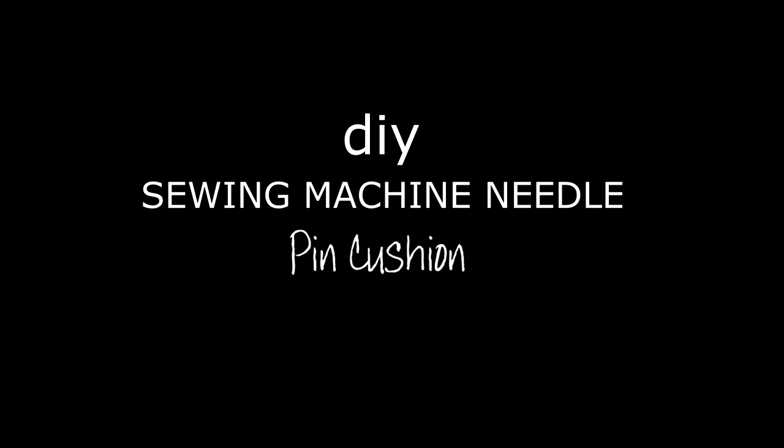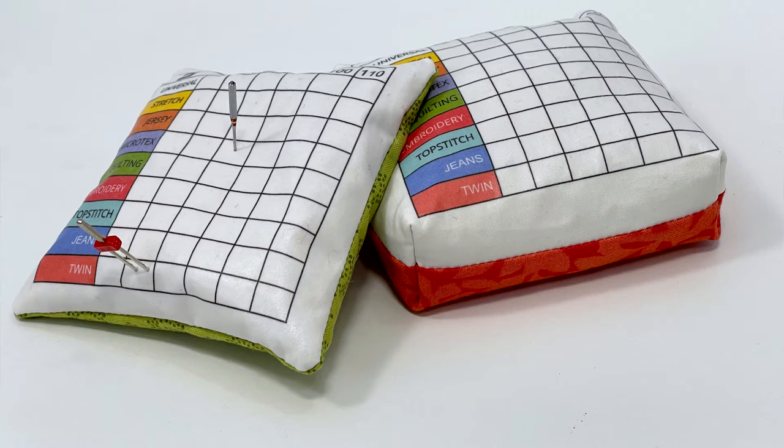In this DIY sewing tutorial, I'm going to show you how to make this nifty little sewing machine needle sorter pin cushion. It's cute, it's functional, and very easy to make. Let's jump right into it. This is a boxy little pin cushion. You can make it just like a pillow if you want to, if you don't want to do the box corners, but they're really easy to make and I'm going to show you how.